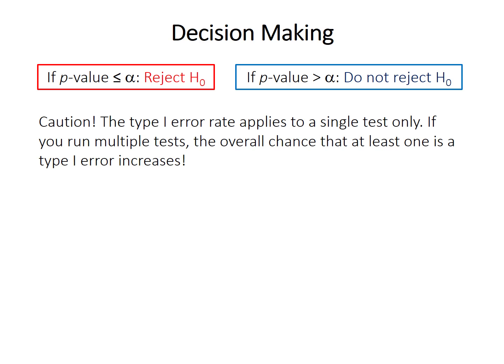Basically, if you run multiple tests, if you sort of dredge through your data trying to find things, there's the overall chance that you're going to find something that is a type 1 error, that you're going to find one of these false positives or false discoveries, is increased potentially a lot.